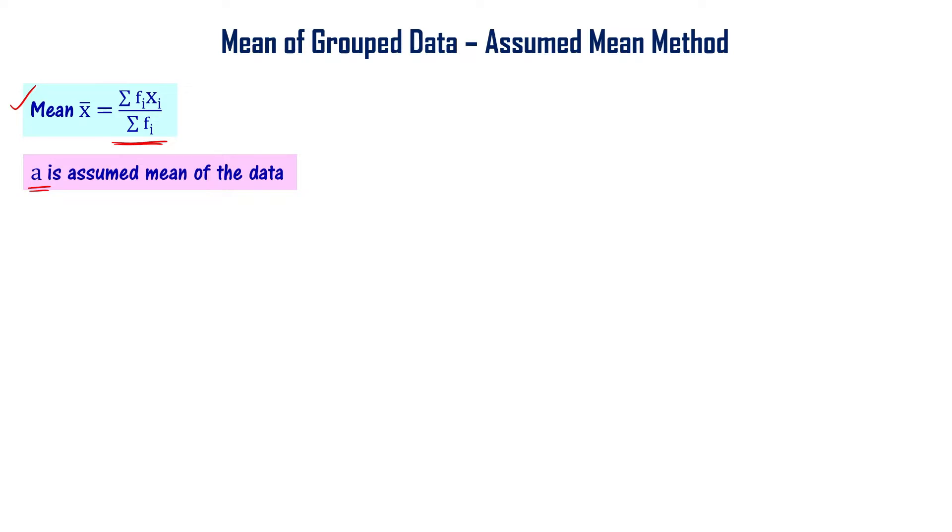It's time consuming. But if I'm assuming 'a' is the assumed mean, I can use a different formula. x̄ is the actual mean, but I'm assuming there is some mean.